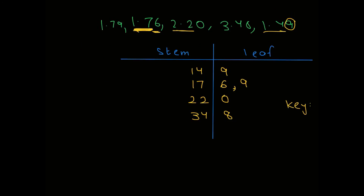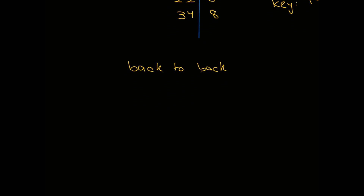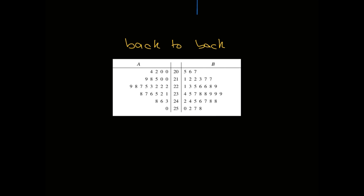We also have another type called a back-to-back stem and leaf diagram. In this diagram, there are two sets of values compared simultaneously. As shown in the past paper question, there are leaves on both sides of the stem — the stem is in the middle, with leaves extending on either side. A back-to-back stem and leaf diagram is used to compare two sets of data.